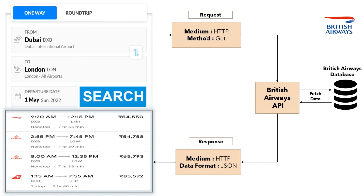In our example, we will be using the GET method because we are getting or fetching data from the API. The British Airways API will take this request, fetch the data accordingly from their database, and send the response back, which will generally be in JSON format. The response will have information about the British Airways flights flying from Dubai to London on 1st May 2022, and this information will be shown in our online platform. As you can see, there is one British Airways flight available for this search. In a similar way, we communicate with other airlines' APIs and show their available flights on our online platform.